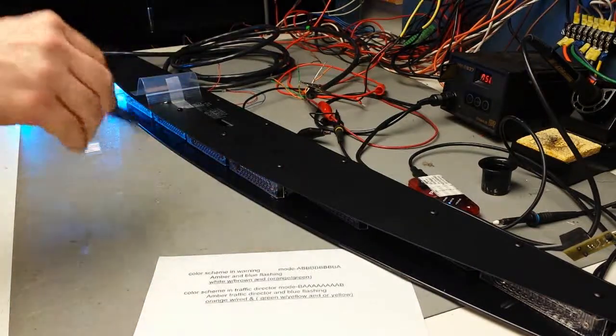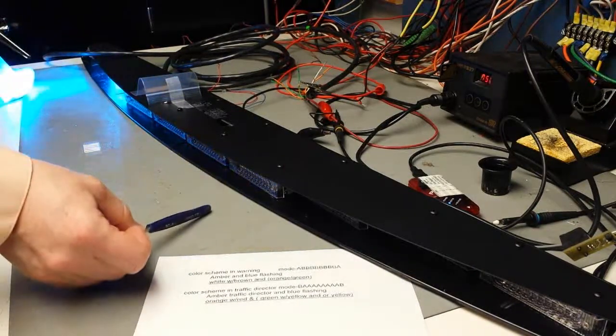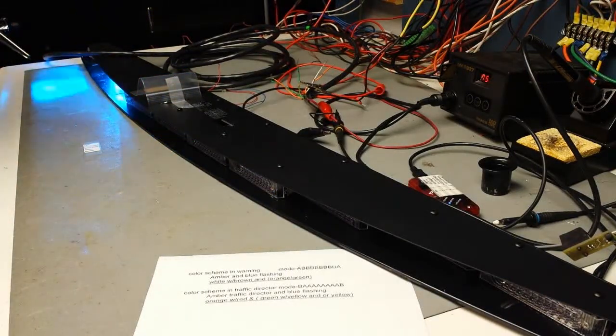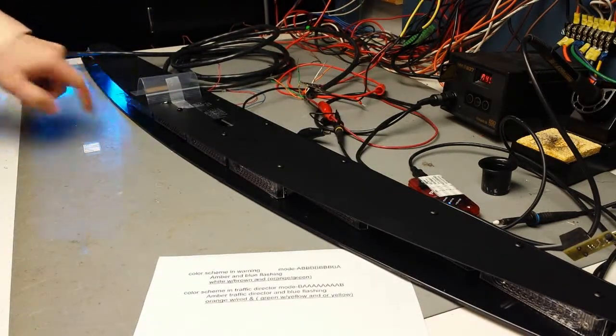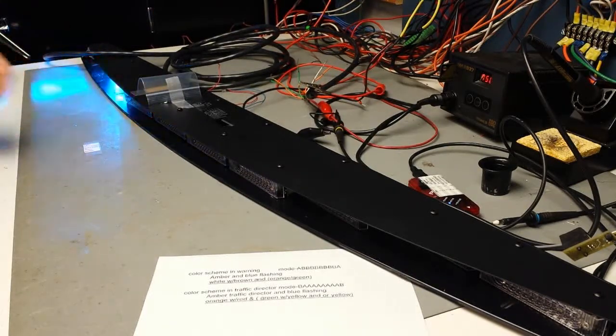It means that if you have both a blue enable, or whatever other color you happen to be enabled, along with the traffic director enable, it would cycle the blues pattern across the whole light X number of times, depending on what the setting is for, and then it will cycle the traffic director X number of times, depending on what the cycle is set for.